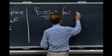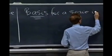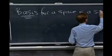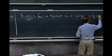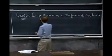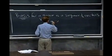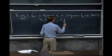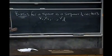For a vector space, a basis is a sequence of vectors. Shall I call them v1, v2, up to, let me say, vd. Now I'll stop with that letter. That has two properties.